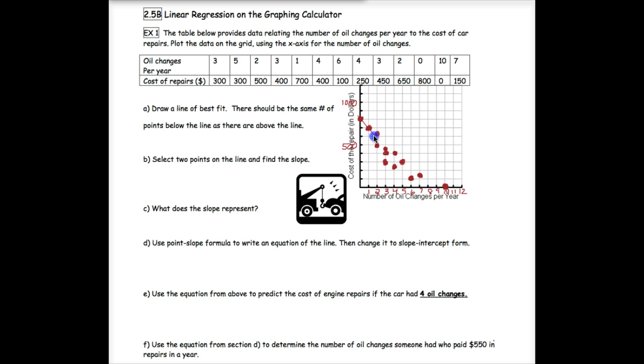I'm going to connect those four because that looks like it's going through my trend, and it goes through about four of the points. I've got one, two, three, four below it, and one, two, three, four, five above it. So we've met the qualifications, we've got our line of best fit.